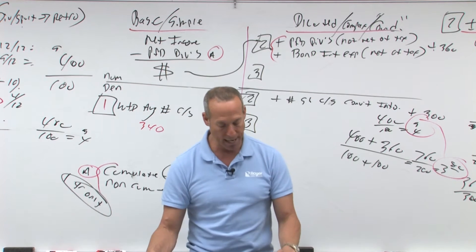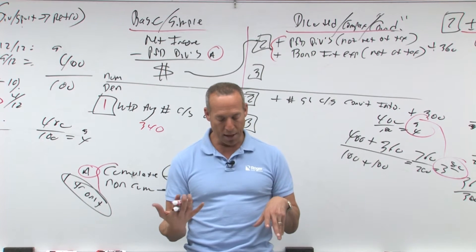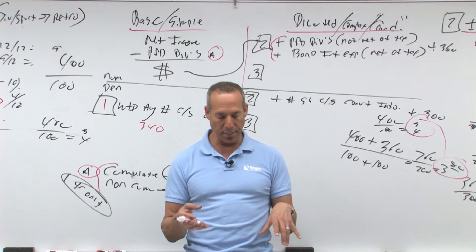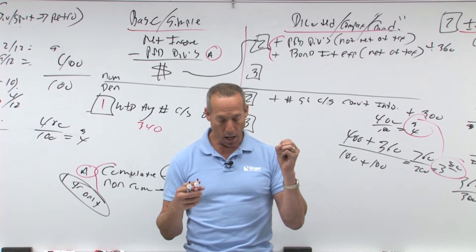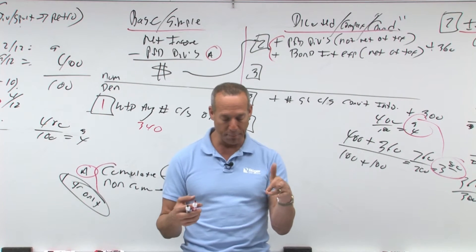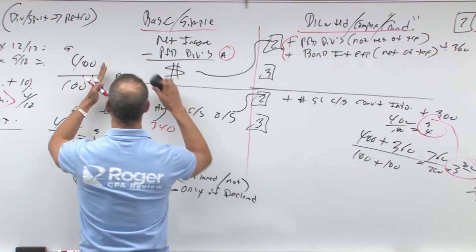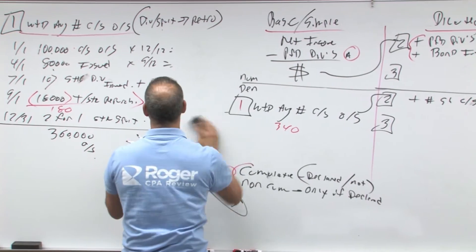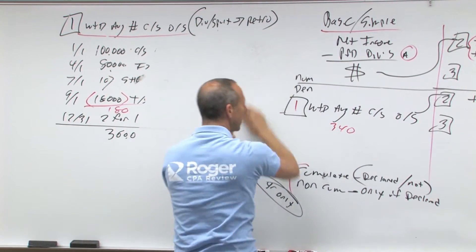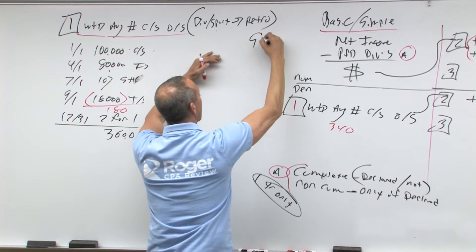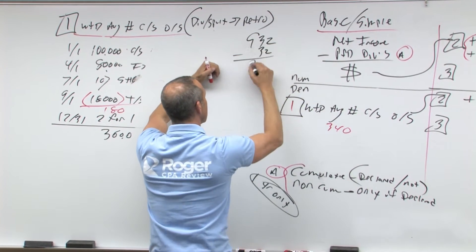To calculate basic EPS, you take your net income of $932, and then we're going to owe the preferred first. So preferred is going to be $100 at 8%, that's $8, times four shares is $32. So the calculation is going to be net income $932 minus $32 (which is 8 times 4), that's $900.